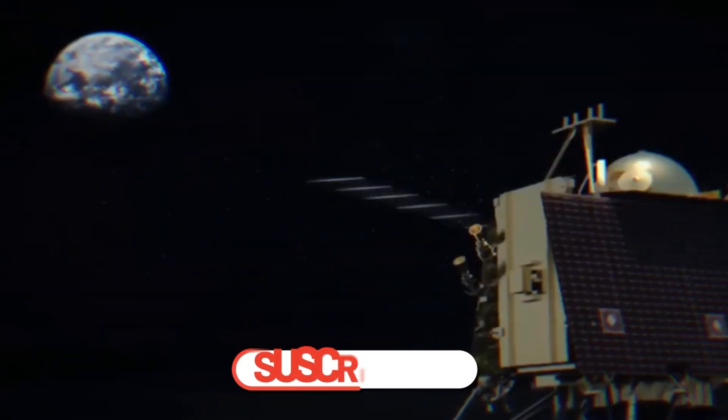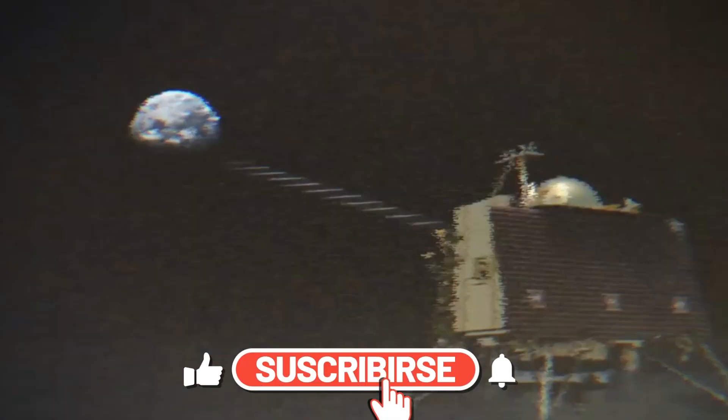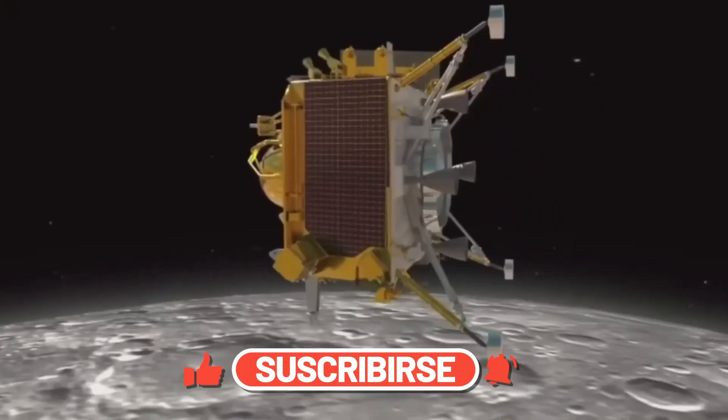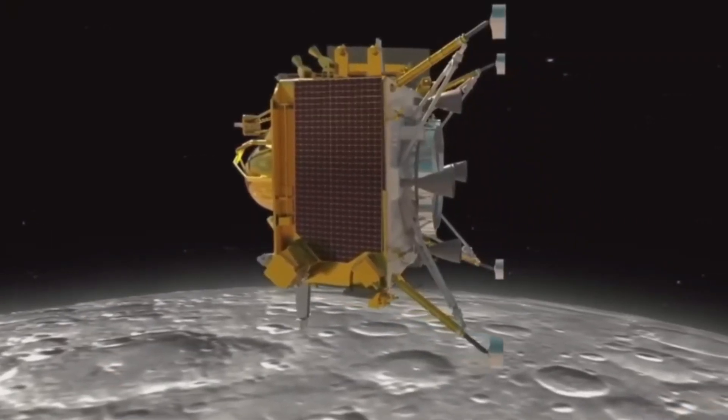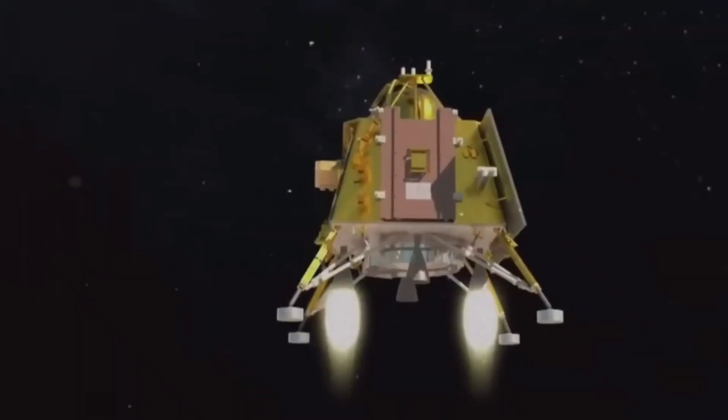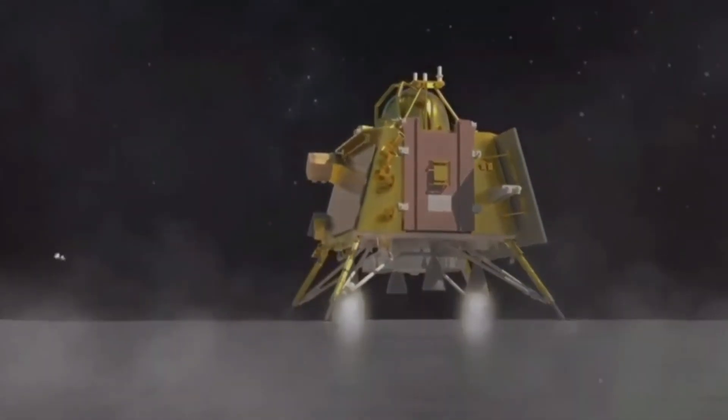One of the biggest challenges was the communication delay of about three seconds between Earth and moon. This meant that Chandrayaan-3 had to rely on its onboard sensors and cameras to autonomously navigate and land on a safe spot near the south pole.